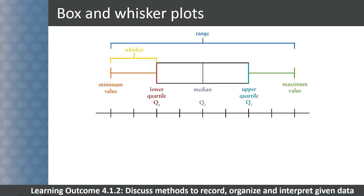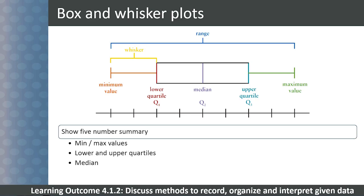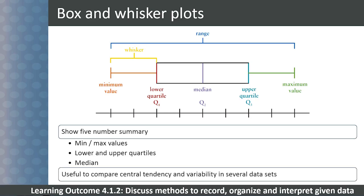Box and whisker plots only show the five number summary of data sets, which was covered in Level 3. The five number summary is the minimum and maximum values, the lower and upper quartiles, and the median. They are particularly useful for visual comparison of the central tendency and variability of a few different data sets.